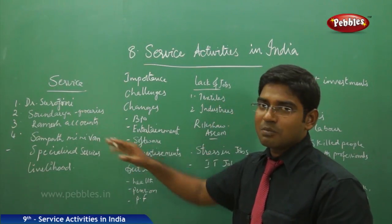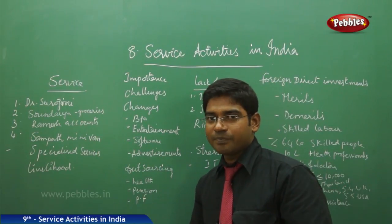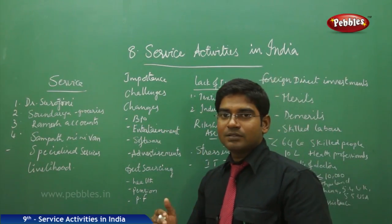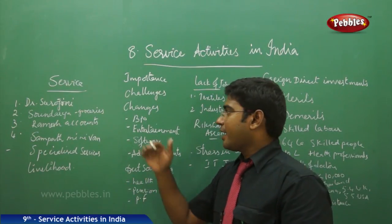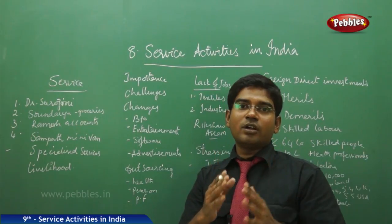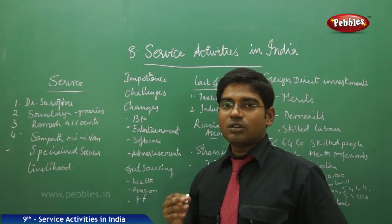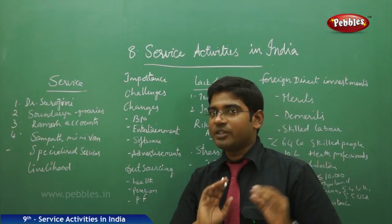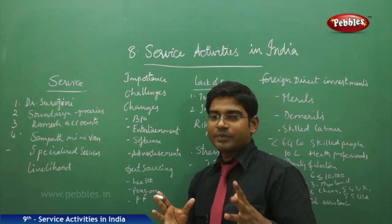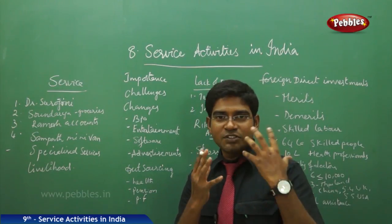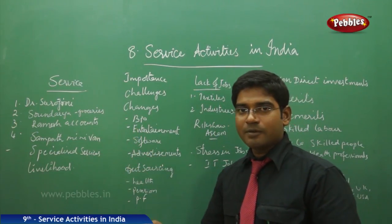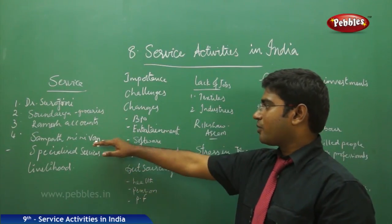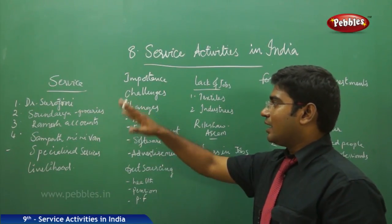Ramesh works as an accountant — he maintains the accounts of the entire industry, looks after bills and checks, and keeps a clear record of everything. Sampath owns a minivan; early morning he goes to the market, and people who buy fish and other products travel in his van to reach their destinations. Sampath provides transportation facilities.